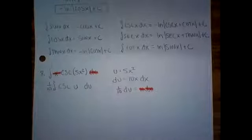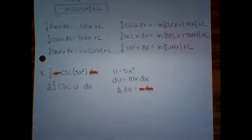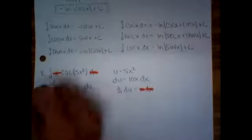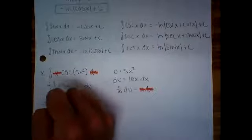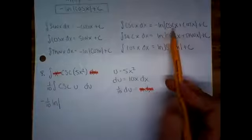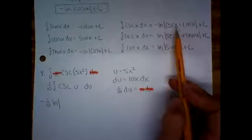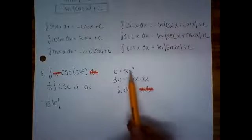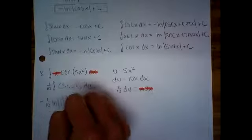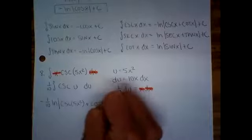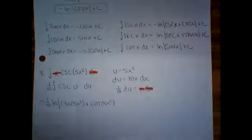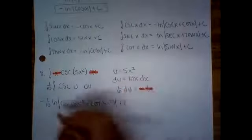And so you would just need to know that one. So it is negative, and we have a one-tenth out front. So it'll be negative one-tenth ln cosecant of... Now, I know the rule says x, but it would be u. So cosecant of 5x squared plus cotangent of 5x squared, like of that stuff, like whatever was in the problem, and then plus c.